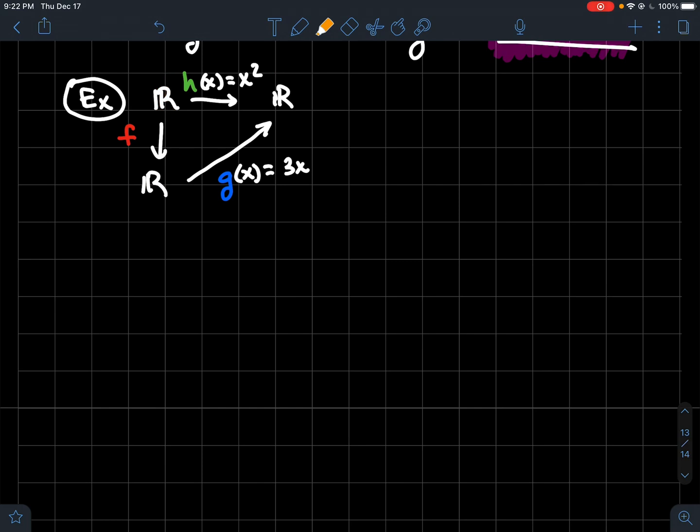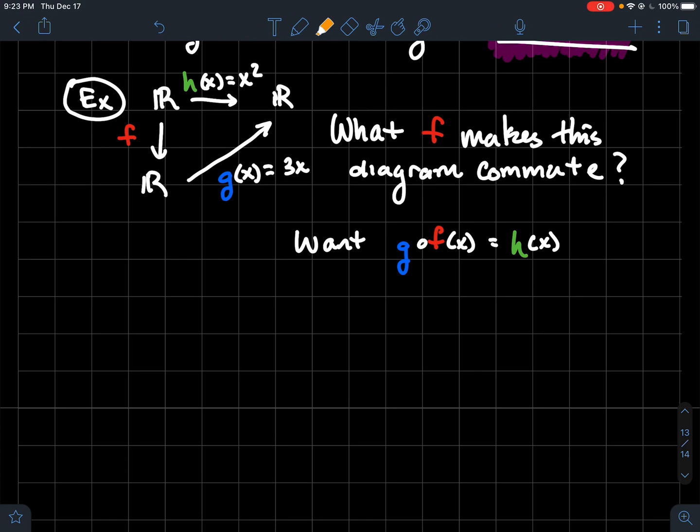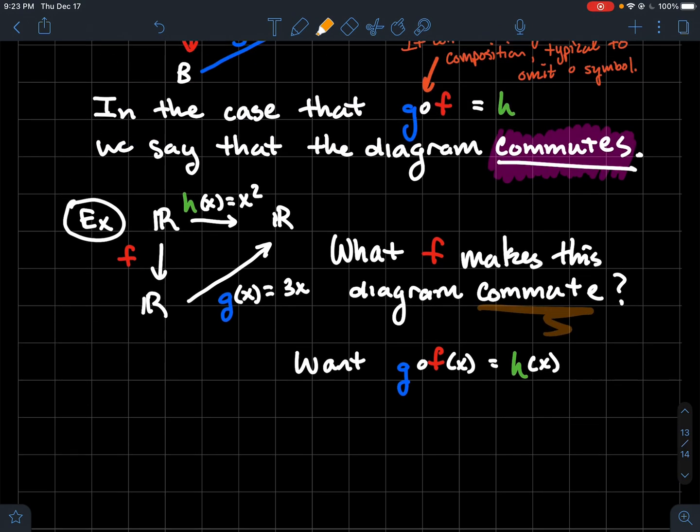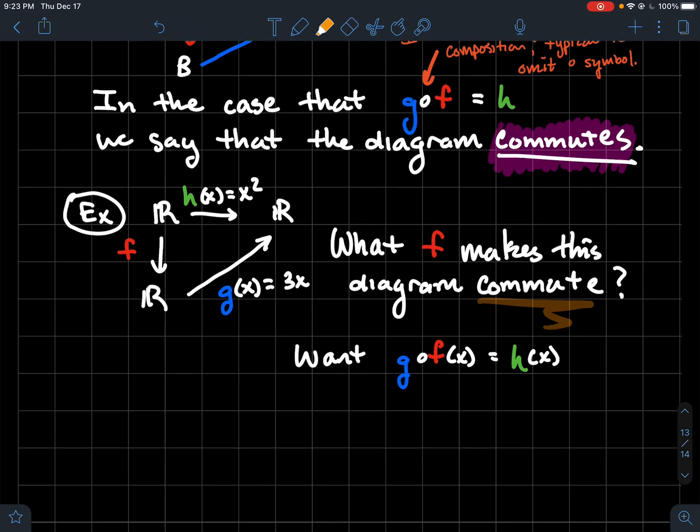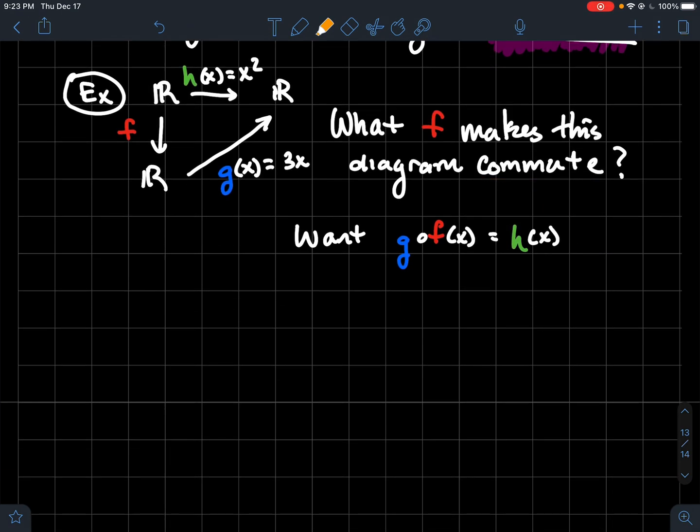But all right, so here's our diagram here. And so h is x squared, and then g is three times x. And the question that I want to ask, that we want to answer together is what function f makes this diagram commute? So what does f have to be to make this diagram commute? And so what do we want? So I've got a definition of what commute means. If it commutes, then that means that composition has to work out. And so what would that look like, then? Well, let's write out what that composition is. g composed of f would be three times f of x. And I want that to be h. And I know that h takes x and squares it. So I want three times f of x to be x squared. And so just solve it for f. So f of x has to be the function x squared over three. So we're saying if this function is x squared over three, then that'll make this diagram commute.